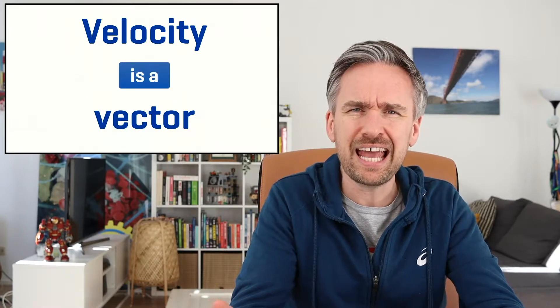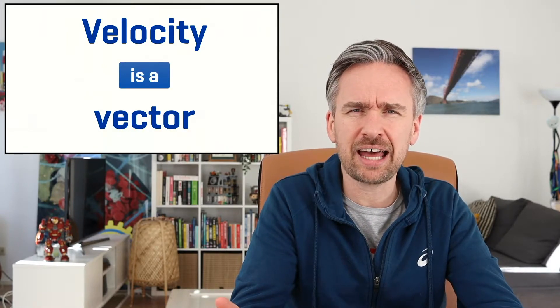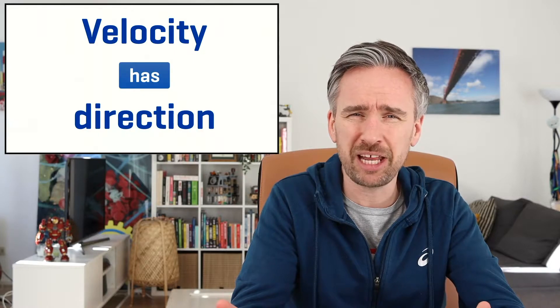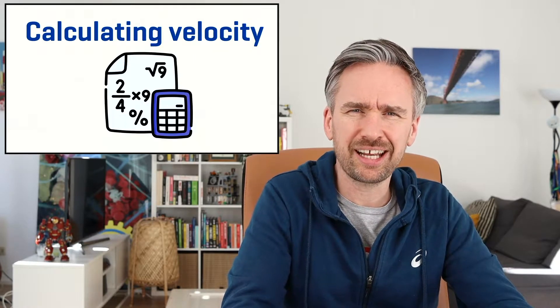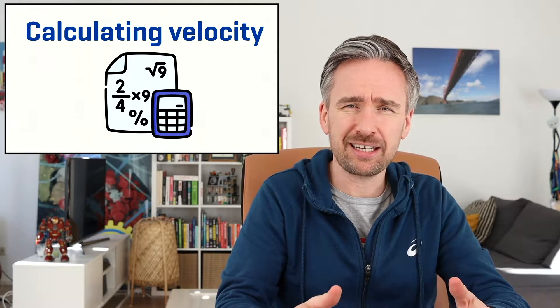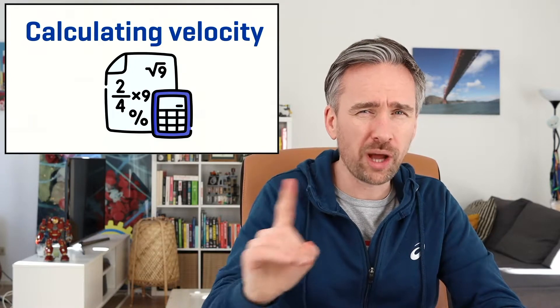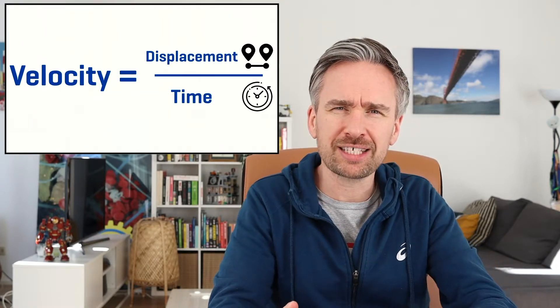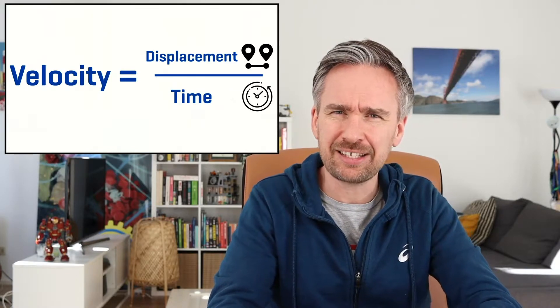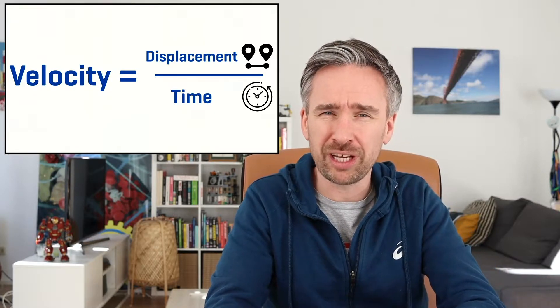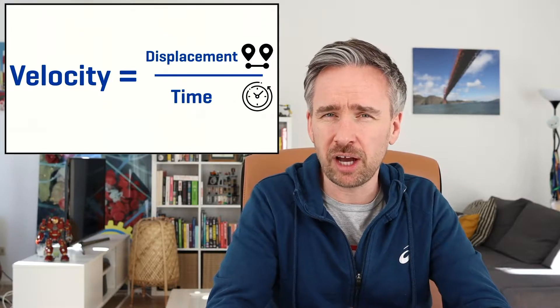What about velocity, and how is velocity different from speed? Well, velocity is a vector quantity, which means that velocity has got a direction. Other examples of vector quantities include displacement and acceleration. The formula to calculate velocity is not that different from speed — it's just that one quantity differs. The formula for velocity is displacement over time, where displacement is how far an object has moved from its starting point to its end point, not the total distance traveled. That's the key difference between speed and velocity.